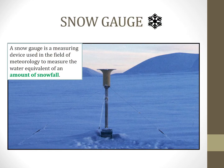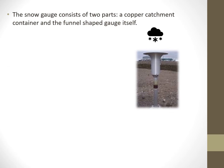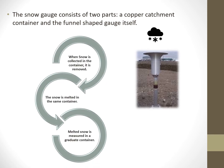The amount of solid precipitation like snowfall can be measured using a snow gauge. The design of a snow gauge is similar to that of a rain gauge. A copper catchment container and funnel-shaped gauge forms the snow gauge. Once the snow is collected in the container, it is removed and melted in the same container. The melted snow is then transferred to a measuring graduate. While the depth of snow is normally measured in centimeters, the water equivalent of melted snow is measured in millimeters.